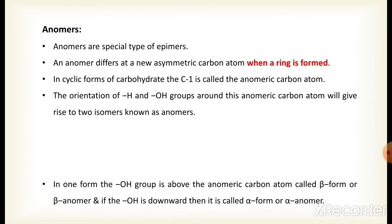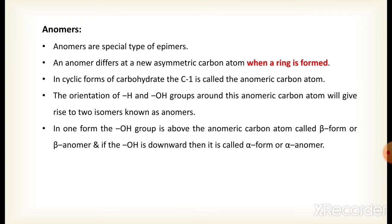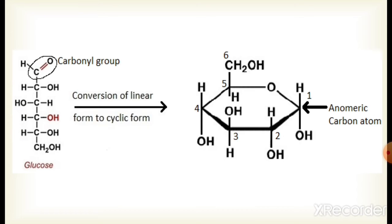In one form, the hydroxyl group is above the anomeric carbon atom — this is known as the beta form or beta anomer. If the hydroxyl group is downward, then it is called the alpha form or alpha anomer. In the cyclic form of sugar, the anomeric carbon atom is the carbon atom that was part of the carbonyl group in the straight chain structure.